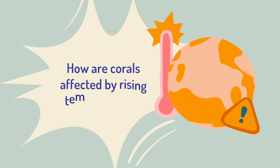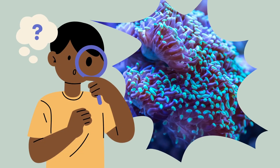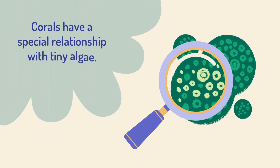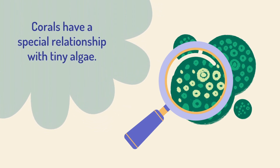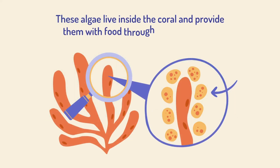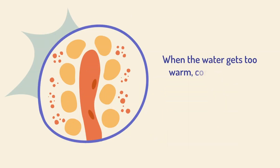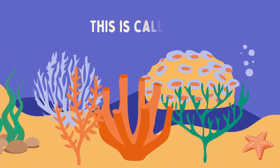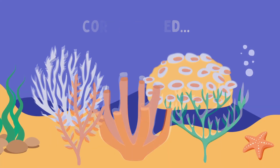How are corals affected by rising temperatures? Corals have a special relationship with tiny algae. These algae live inside the coral and provide them with food through photosynthesis. When the water gets too warm, coral becomes stressed and expels the algae, turning them white or bleached. This is called coral bleaching.